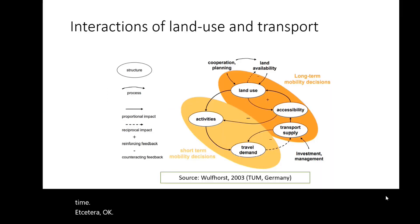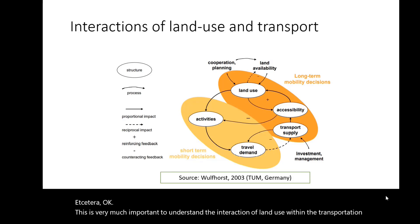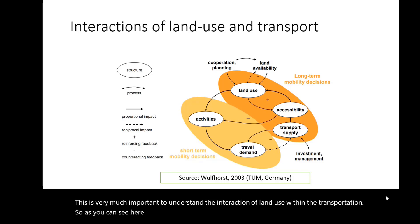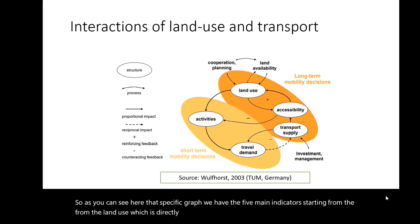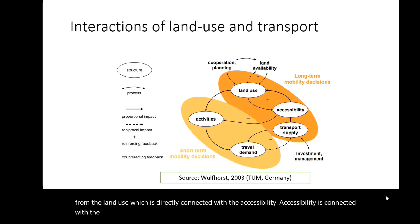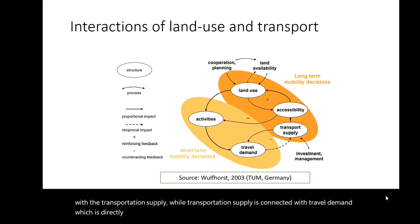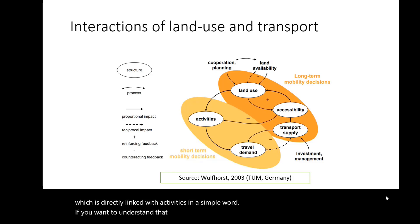It is very important to understand the interaction of land use within transportation. As you can see in this graph, we have five main indicators starting from land use, which is directly connected with accessibility. Accessibility is connected with transportation supply, while transportation supply is connected with travel demand, which is directly linked with activities.